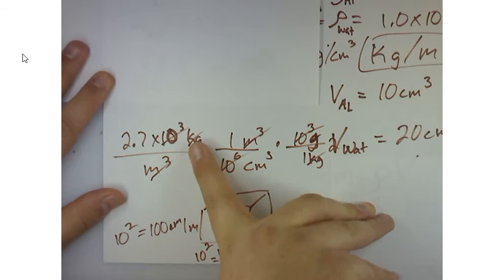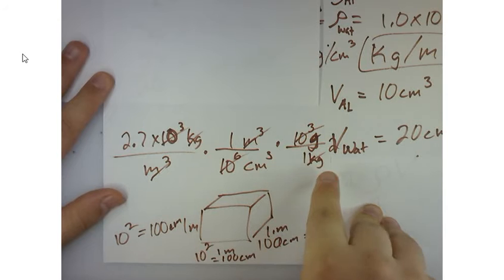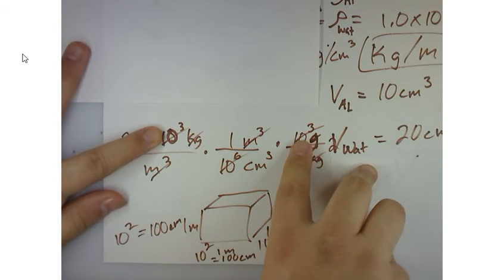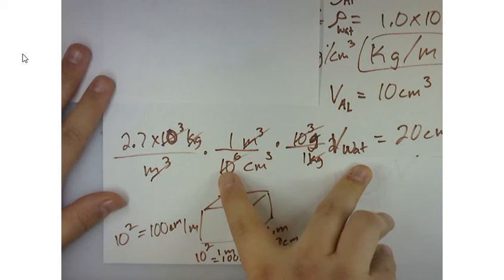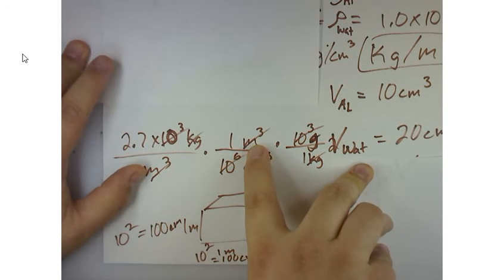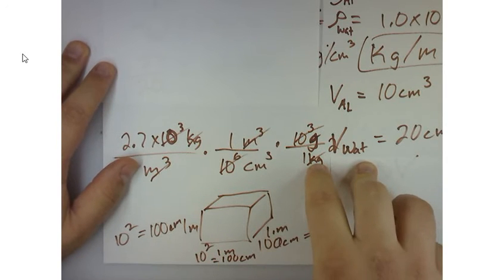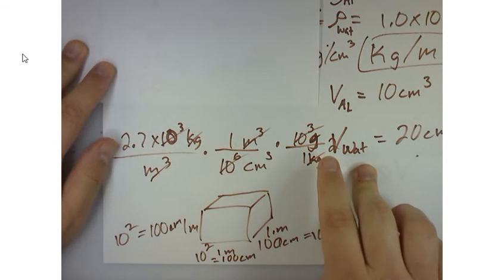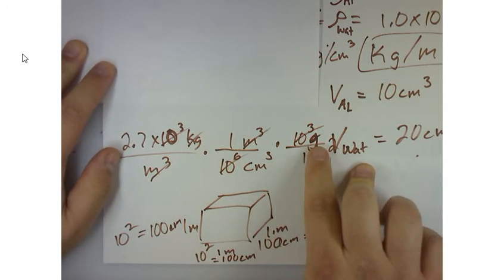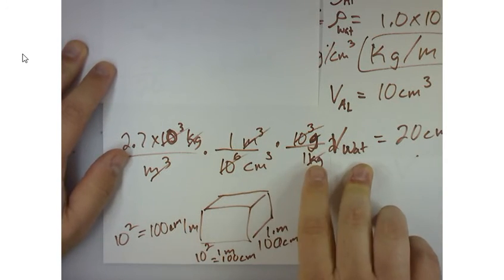And then I need to convert from kilograms to grams. On the top, I've got 10 to the third times 10 to the third, which is the same as 10 to the sixth, so those cancel out. I've got meters cubed and meters cubed - those cancel out. And then I've got kilograms and grams.